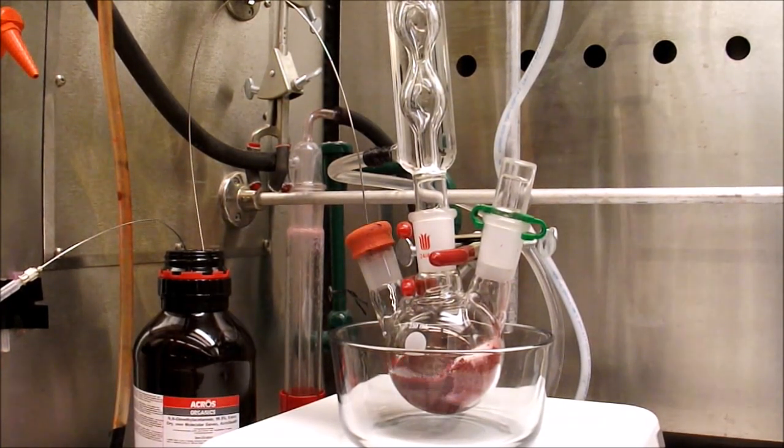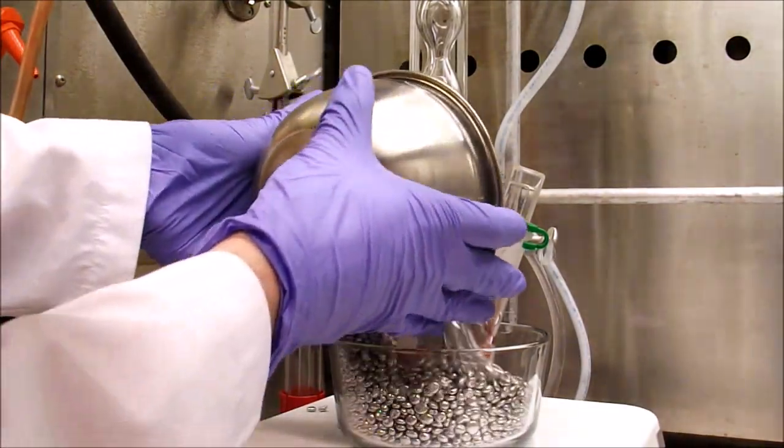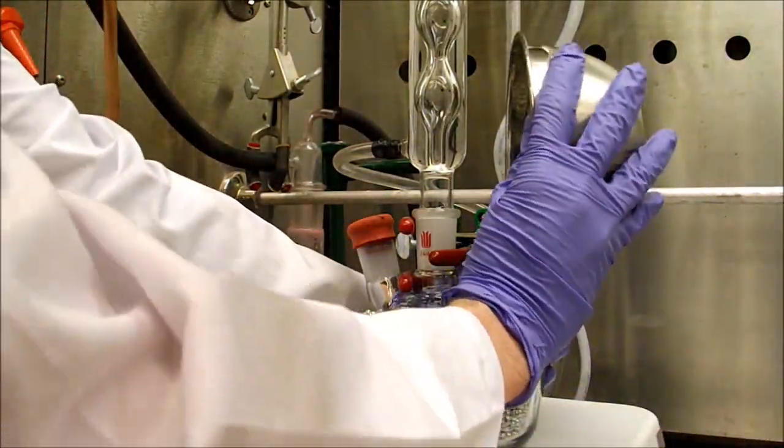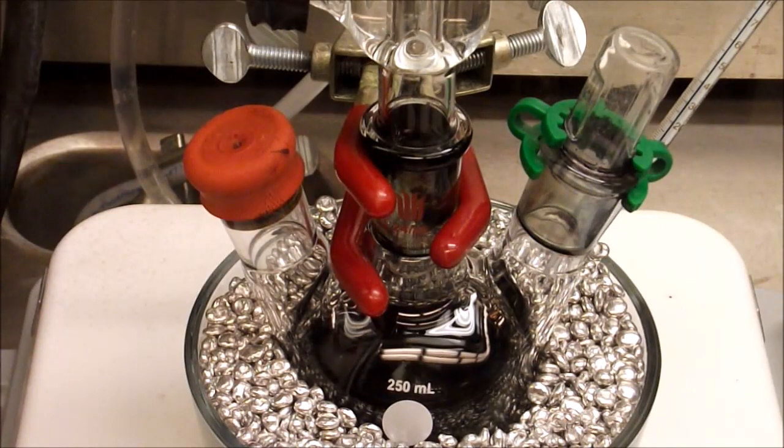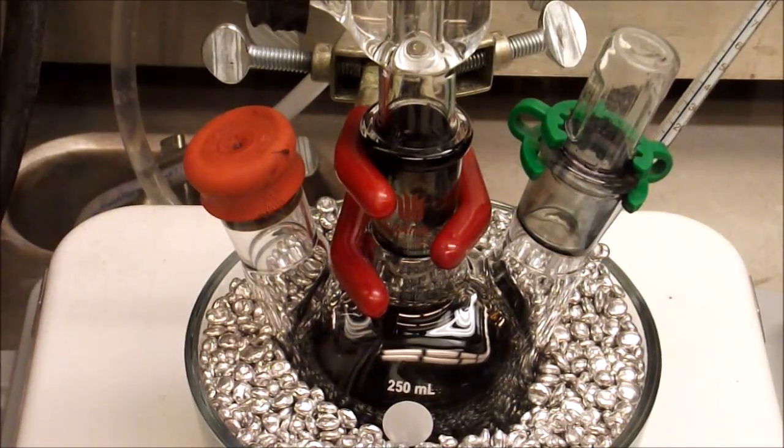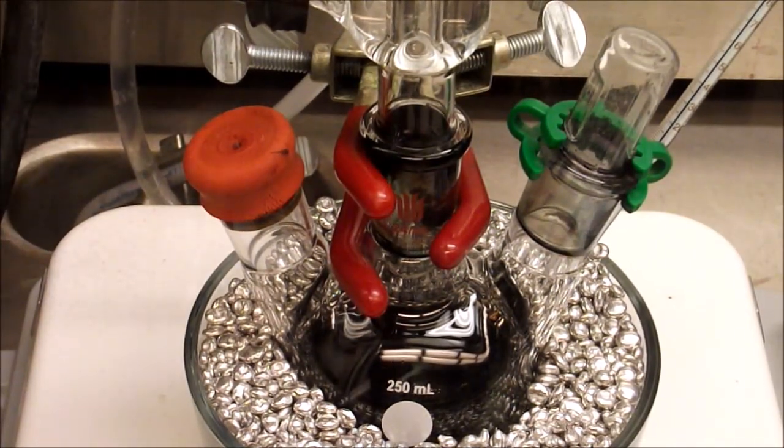Once all the reagents have been added, the reaction is heated to a gentle reflux for 24 hours, during which the reaction turned from red to purple and then back to red. I had some troubles maintaining steady stirring and the reaction splashed a bit which is why there is some material in the joints of the glassware.